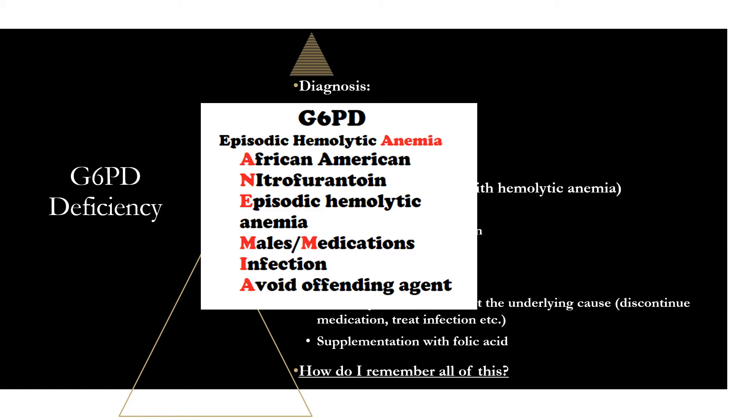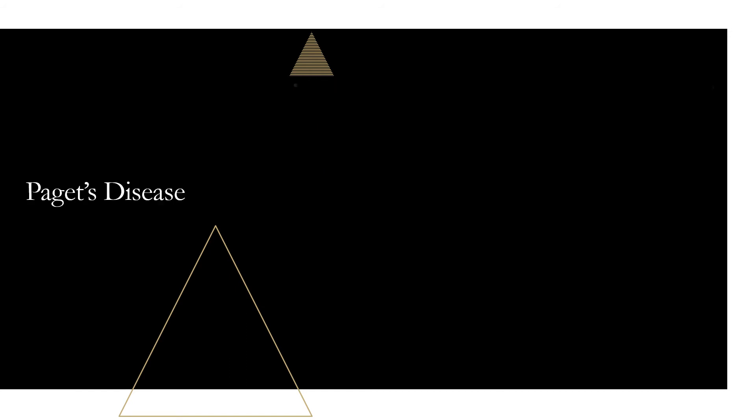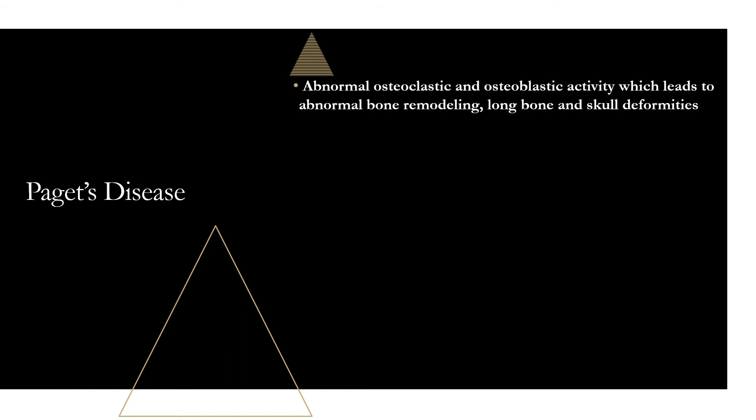Moving on to Paget's disease. Paget's disease involves abnormal osteoclastic and osteoblastic activity, leading to abnormal bone remodeling. You wind up with long bone and skull deformities. The bones keep getting larger from this hyperactive breakdown and rebuilding, creating large but ultimately weak and fragile bones since osteoblasts can't keep up with osteoclast activity.